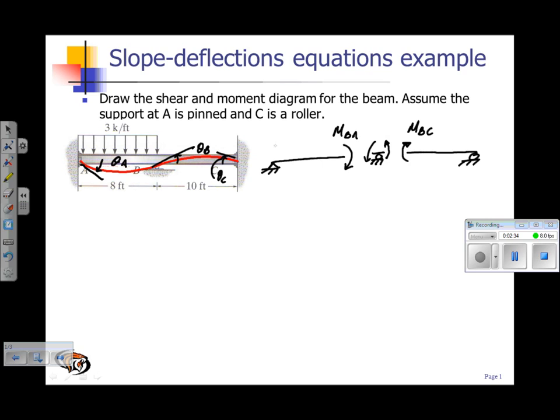So step two, find the fixed-end moments. We only need fixed-end moments for span AB. The fixed-end moment for span B to C will be zero. In this case, we have a distributed load.